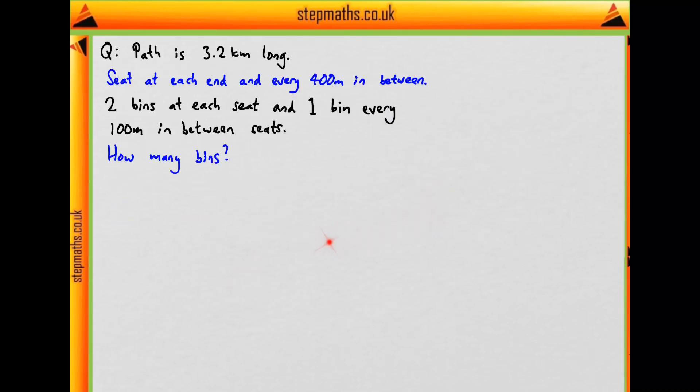So where should we start? Well with these questions it's usually a good idea to do some sort of diagram. We've got seats and bins, so let's come up with a color scheme: purple for seats and pink for bins. Now before we work out how many bins we've got, we need to look at how many seats we have, because we're told we have two bins at each seat.